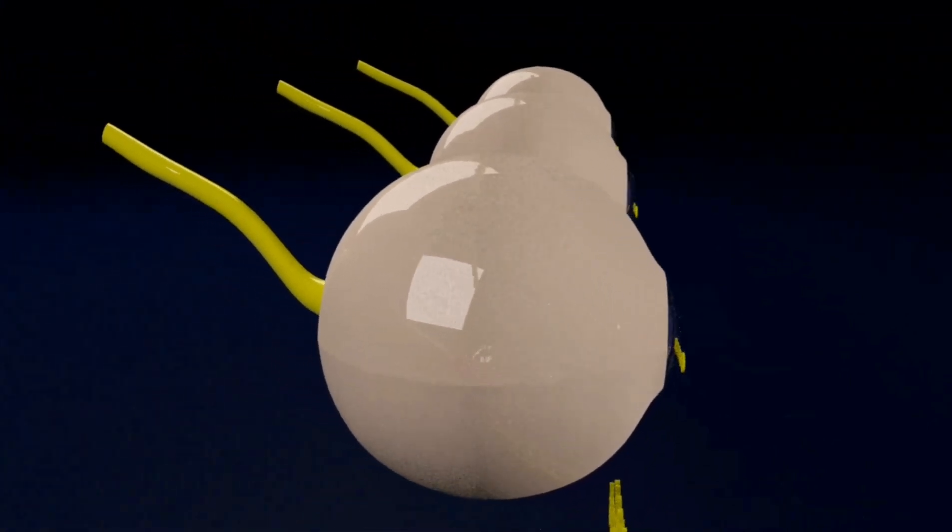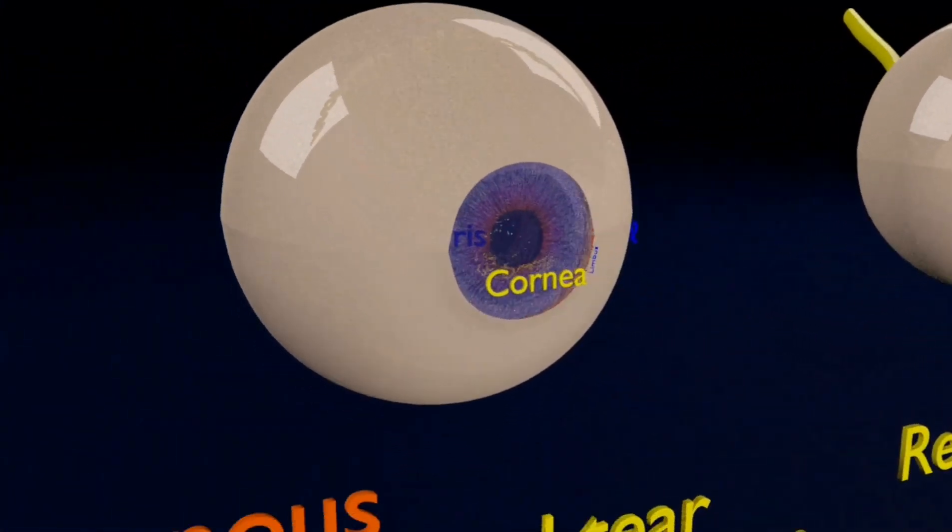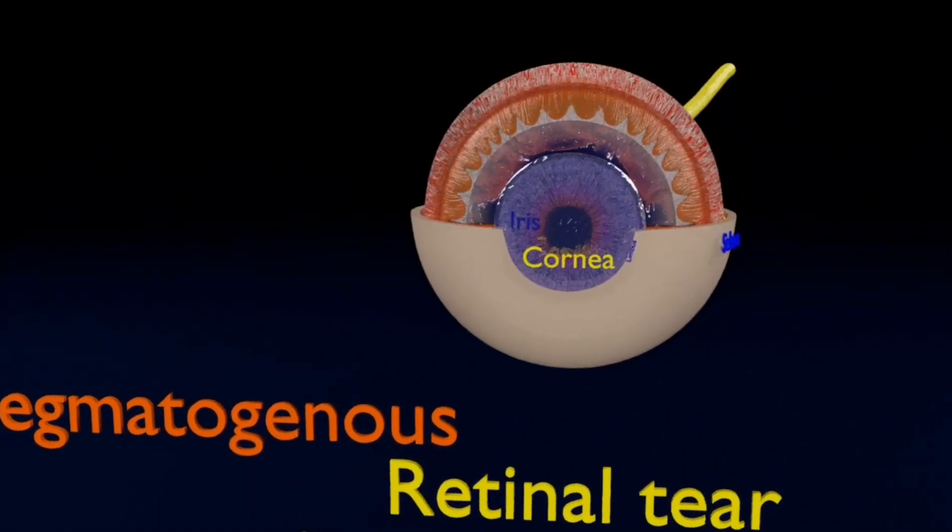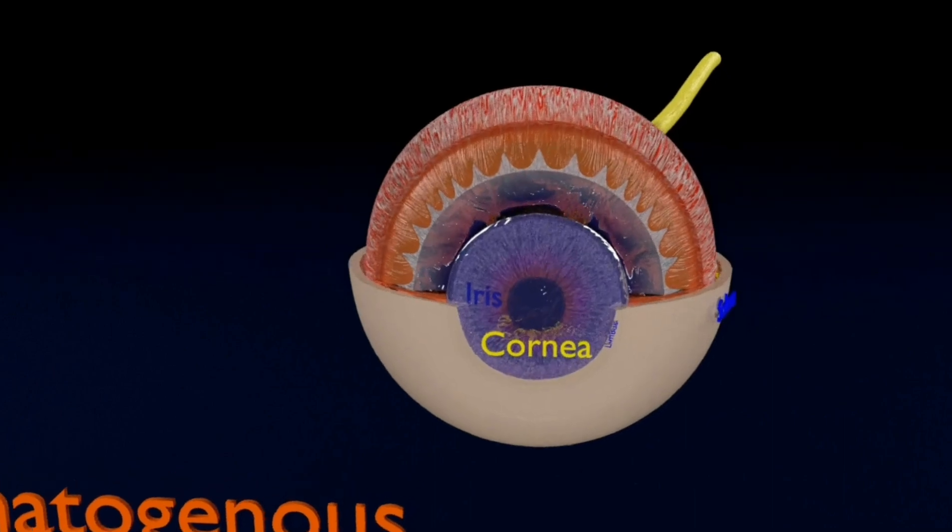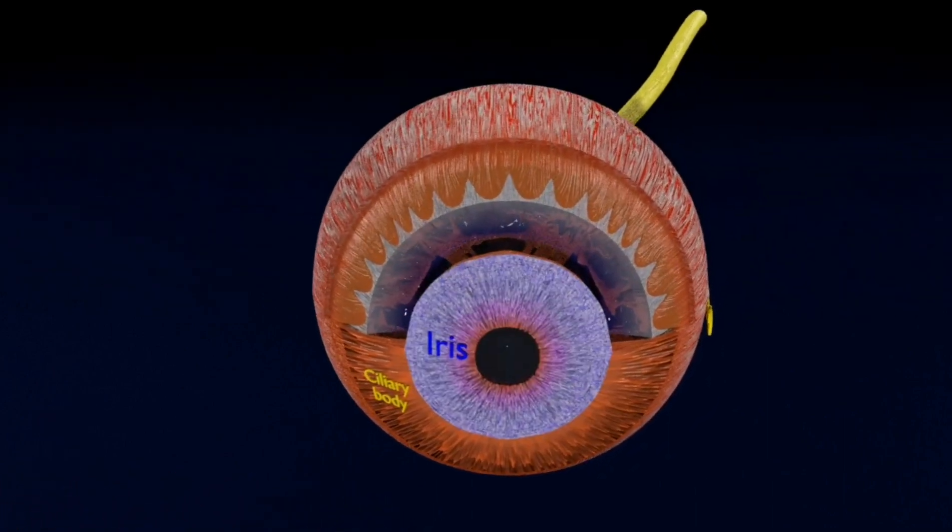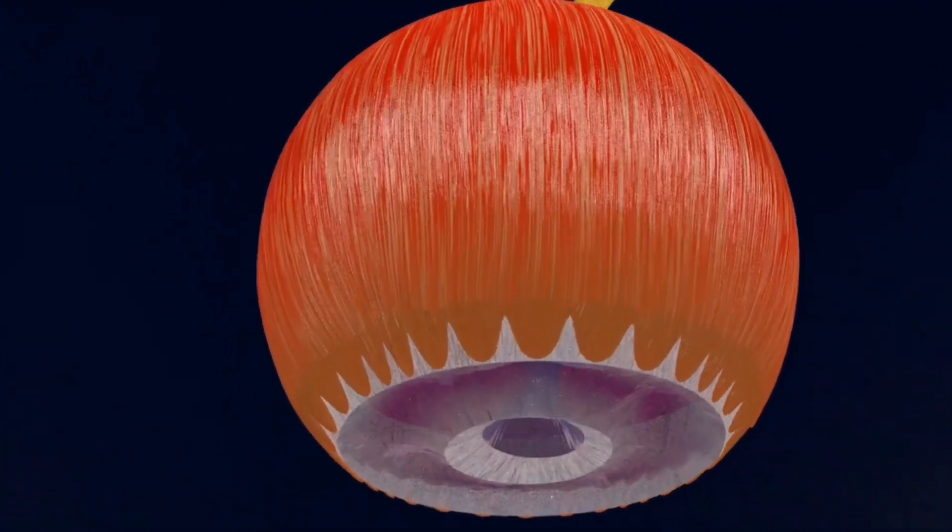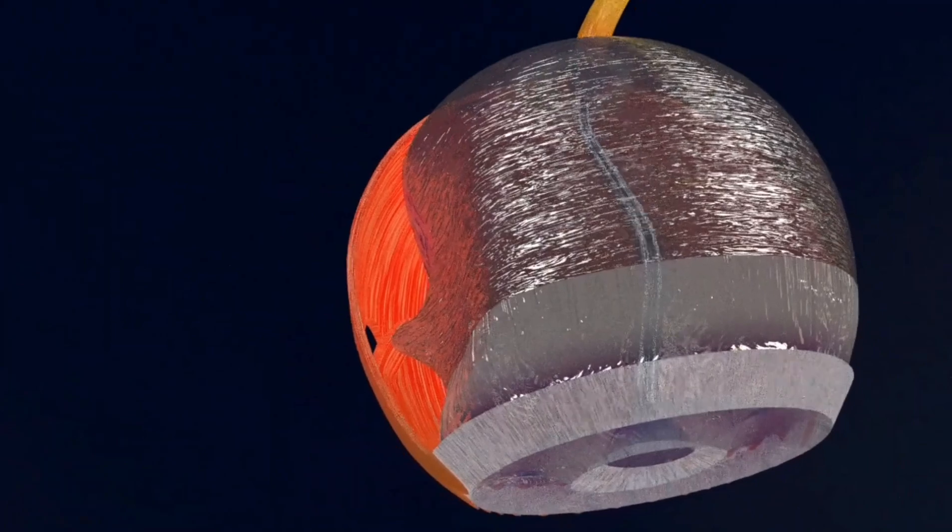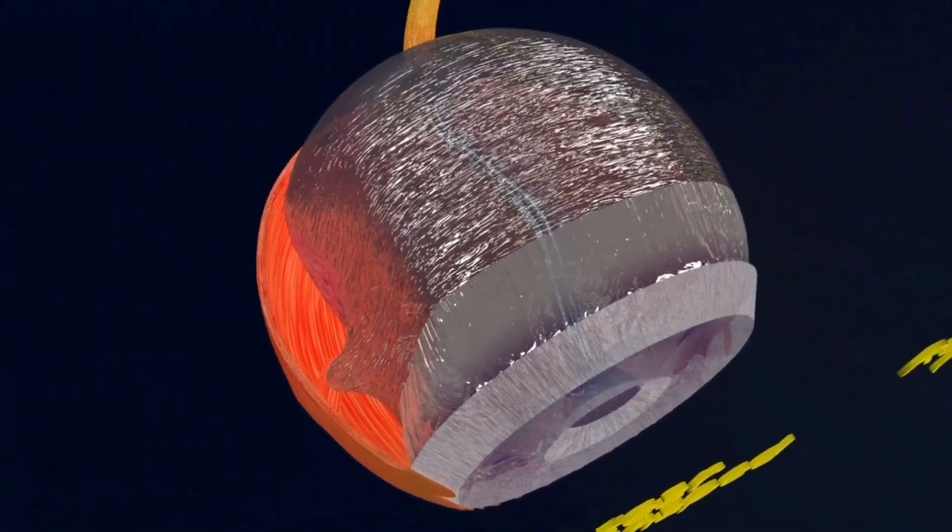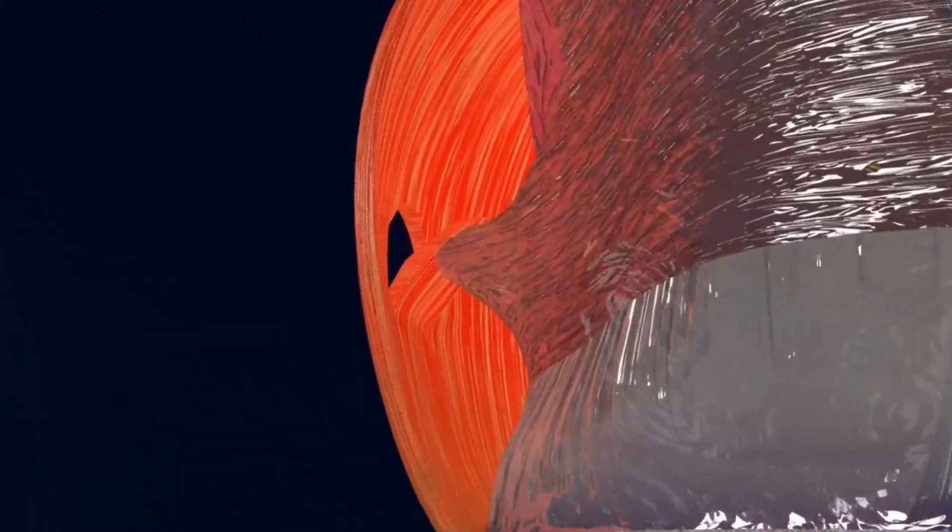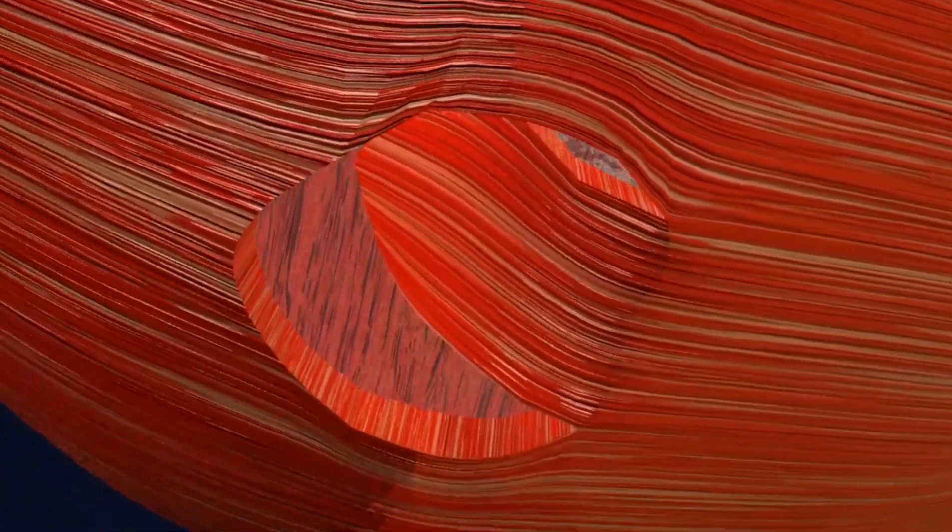Next going to the second type of rhegmatogenous retinal detachment. More causes are gradually reduced peripheral vision, a curtain-like shadow over your visual field, or flashes of light in one or both of your eyes, also called photopsia. There is no retinal detachment, but the tear in the retina is also in horseshoe shape as you can visualize in the 3D model. That's why this type of detachment or this type of tear is called horseshoe tear.